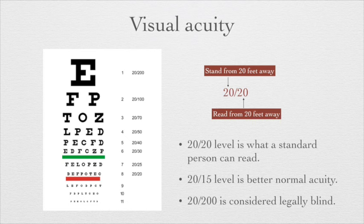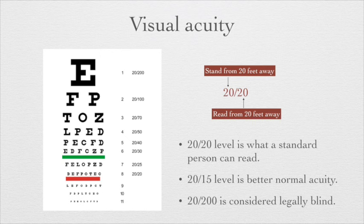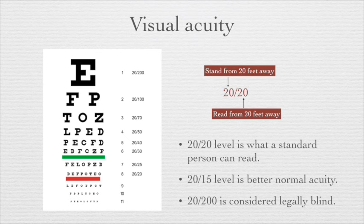Healthy young eyes often exceed this standard level. For example, a person with 20/15 vision indicates that what a normal person can see at 15 feet, that person can see from 20 feet away — meaning they have better than normal acuity. If a person has a score of 20/200, that person can only see at 20 feet what most people see at 200 feet, which is quite bad vision.